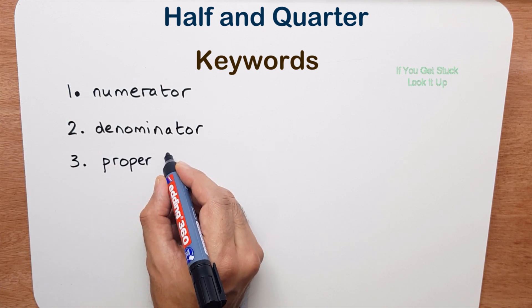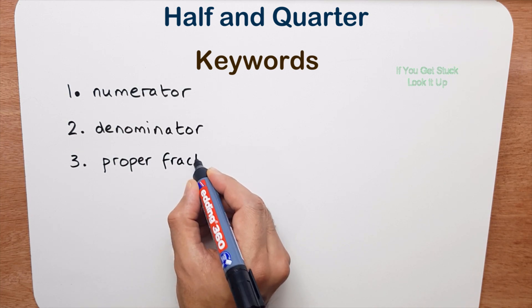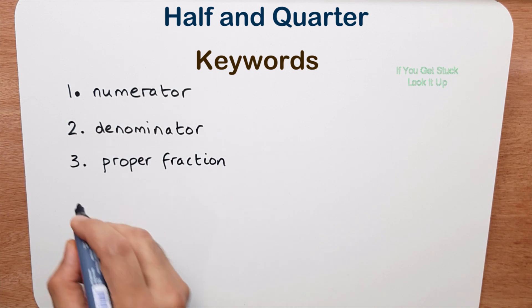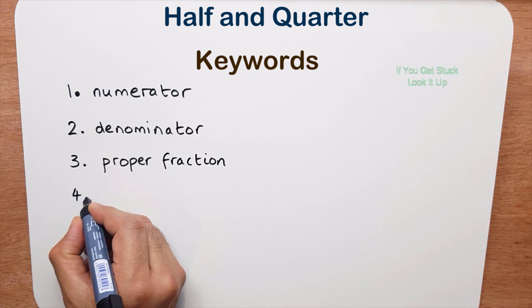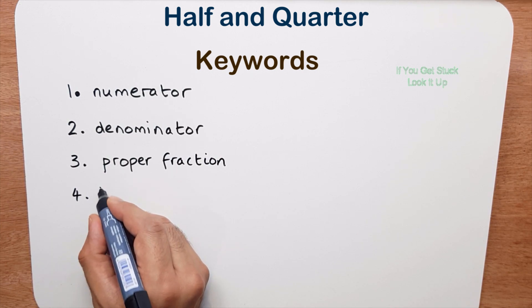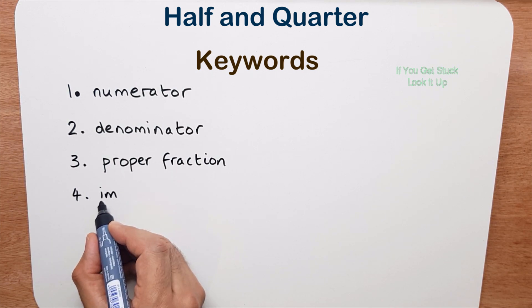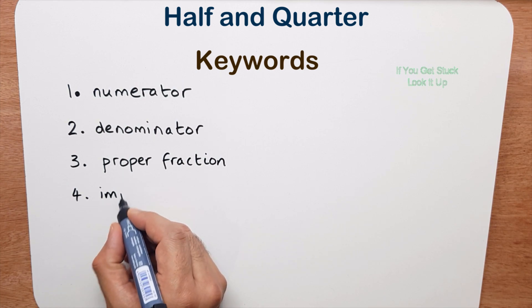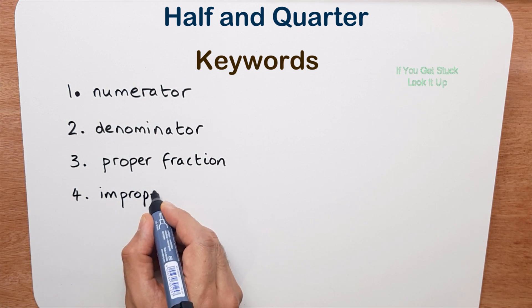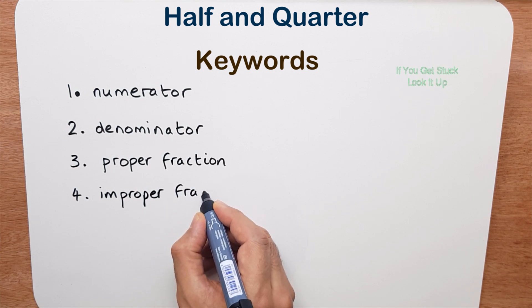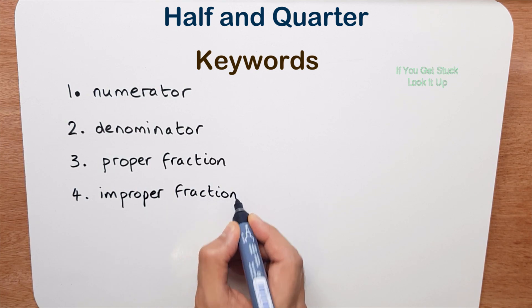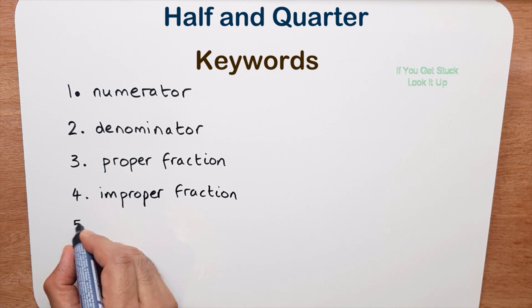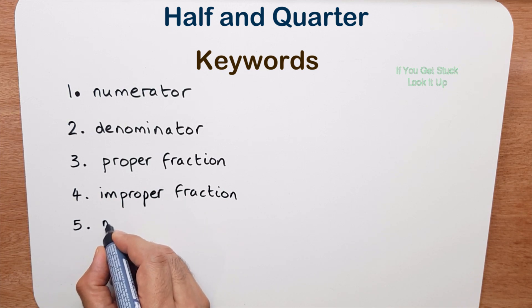Number three, proper fraction. Number four, improper fraction. So we just add the letters improper. Number five, mixed number.